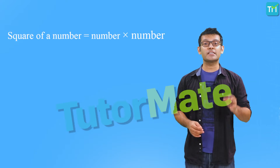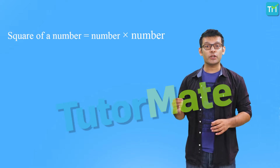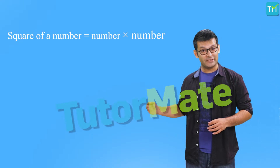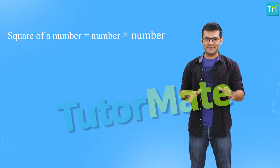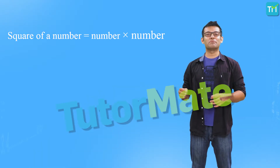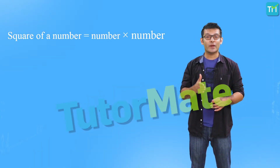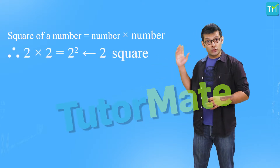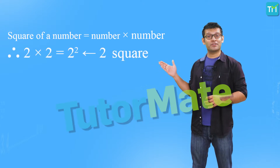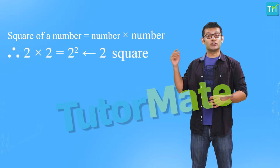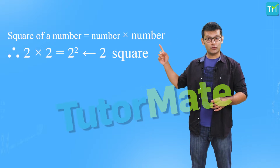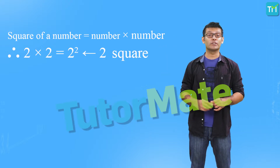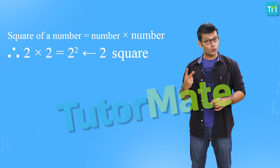The square of any number is equal to the product of the number when it is multiplied by itself. Basically, multiplying a number by itself gives you the square of that number. So, 2 x 2 can be written as 2 raised to the power 2, or 2 raised to 2. It is also called 2 square.